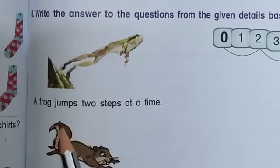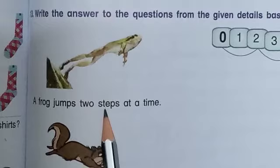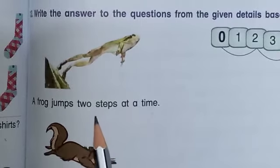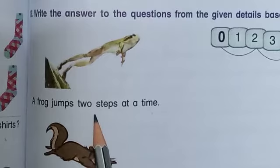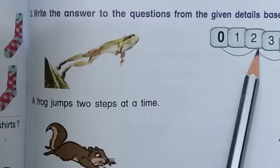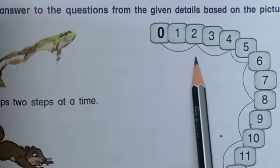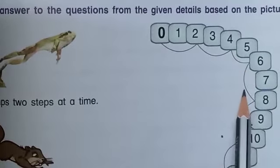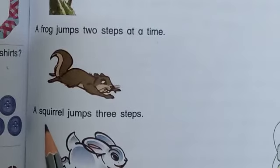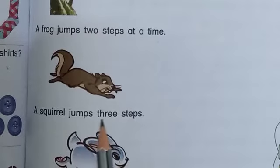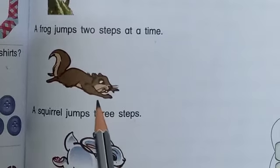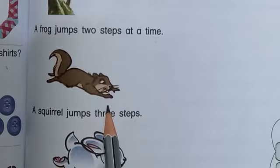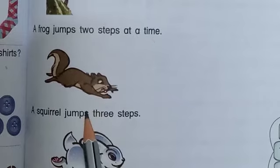First one: a frog jumps 2 steps at a time. So the frog jumps 2 steps at a time. 0 to 2 is the first jump, second jump 2 to 4. So the frog's jumps are 2-2, meaning the 2 times tables. Second picture: a squirrel jumps 3 steps, so that's the 3 times tables. Frog is 2 times tables.